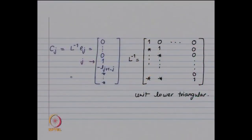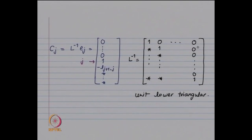That is what makes our inverse unit lower triangular. When you look at L⁻¹, it has 1s along the diagonal, stars (either 0 or non-zero) below the diagonal, and all 0s above. So we get L⁻¹ is also unit lower triangular.